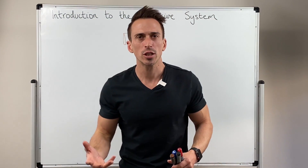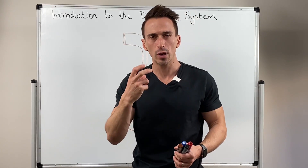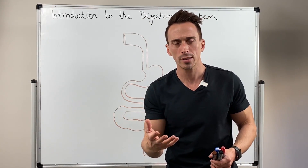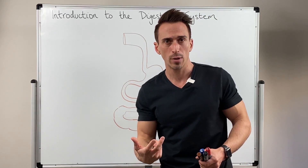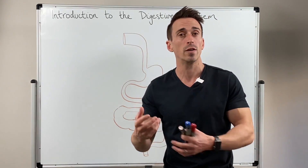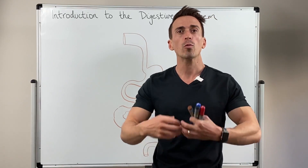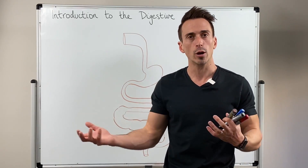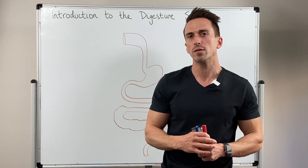Very basically, the digestive system takes in food and breaks this food down into its micronutrients, and then absorbs these nutrients into the bloodstream for it to be dispersed through the tissues of the body to be used for energy or as building blocks. Now whatever remains gets defecated and leaves the body, and this is the major function of the digestive tract.